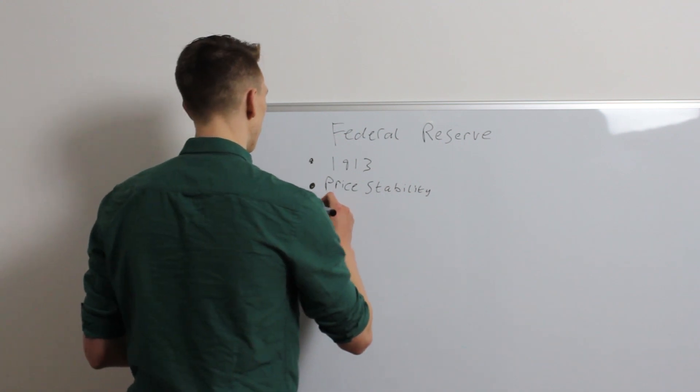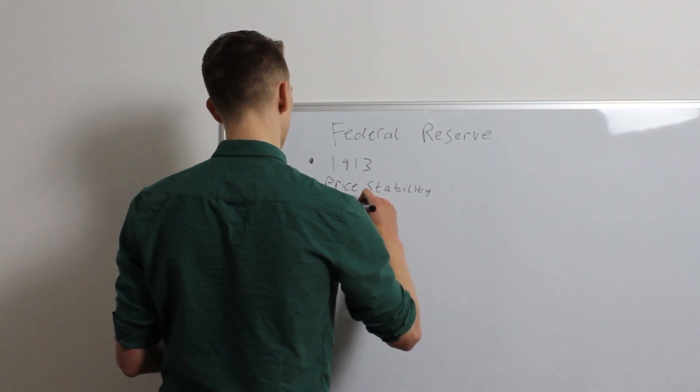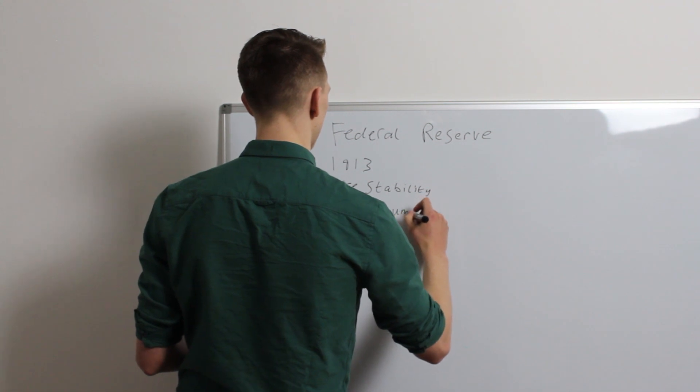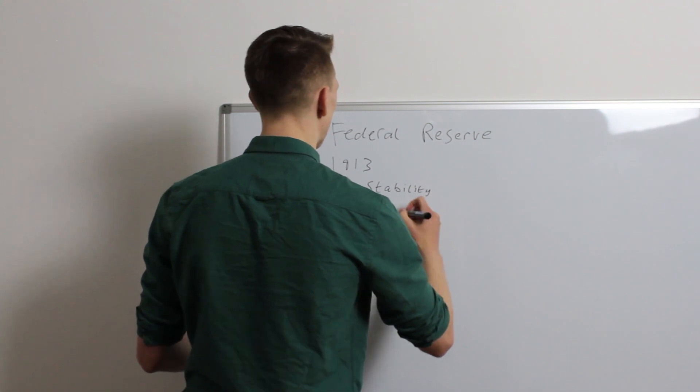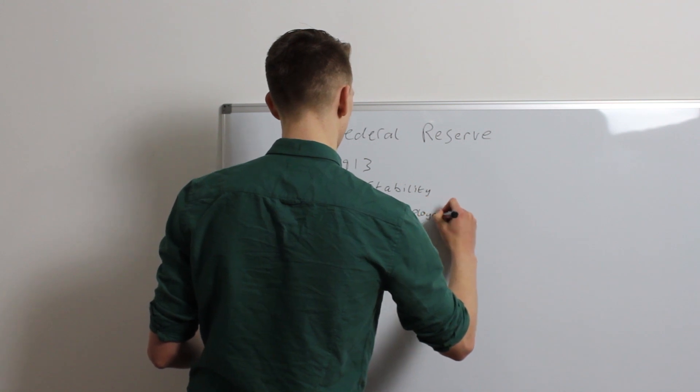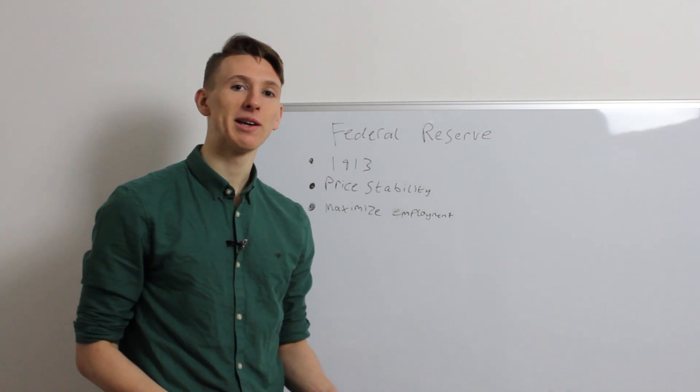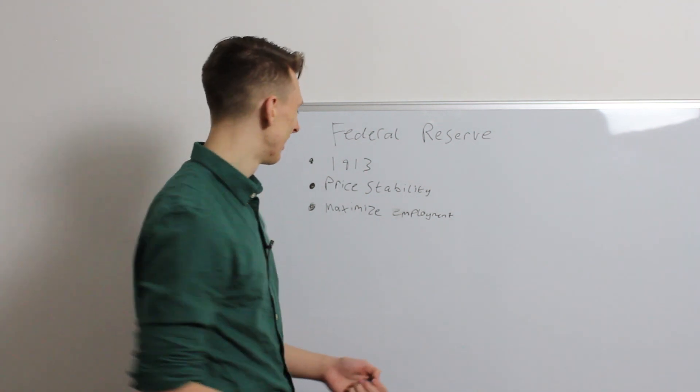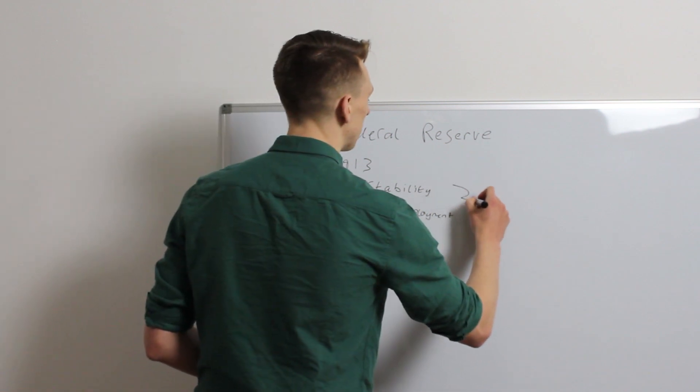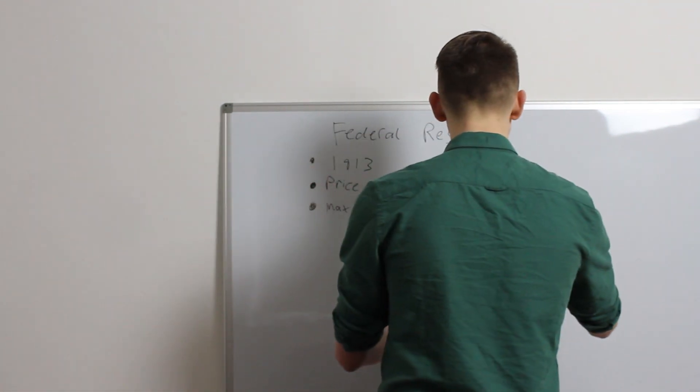The next aim is to maximize employment. Somebody who maximizes unemployment isn't very good at managing the economy. So, maximizing employment. And we can actually call these two main aims the dual mandate of the Federal Reserve.